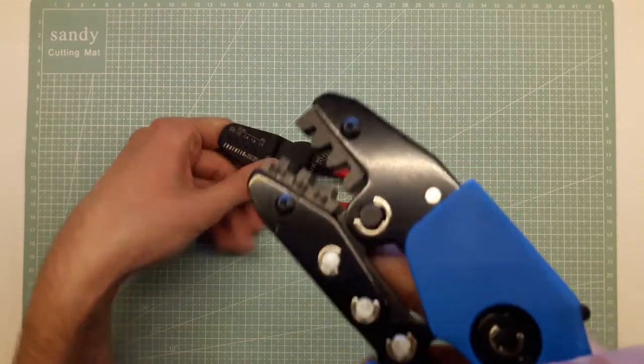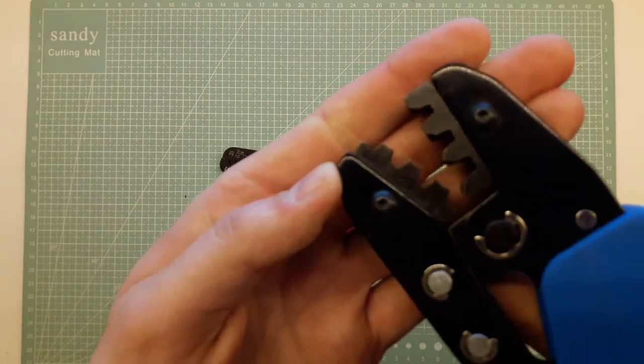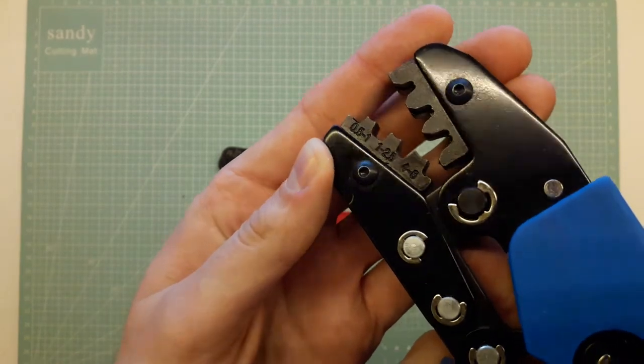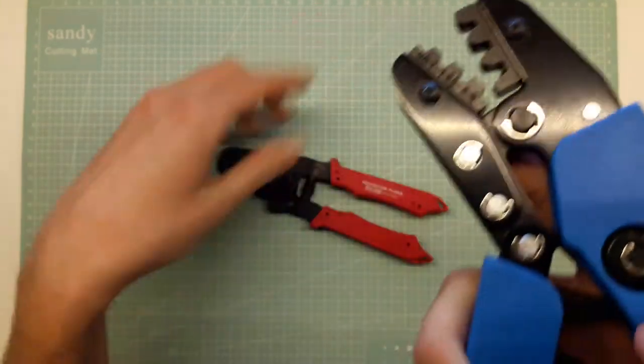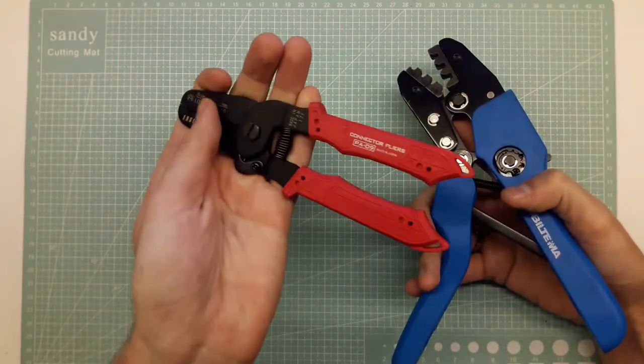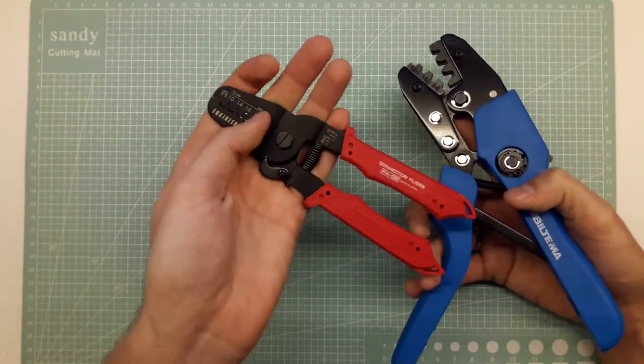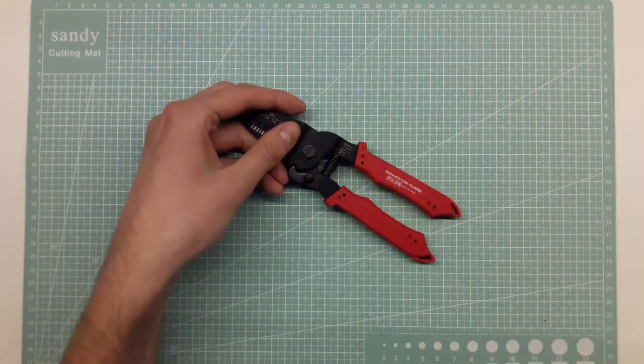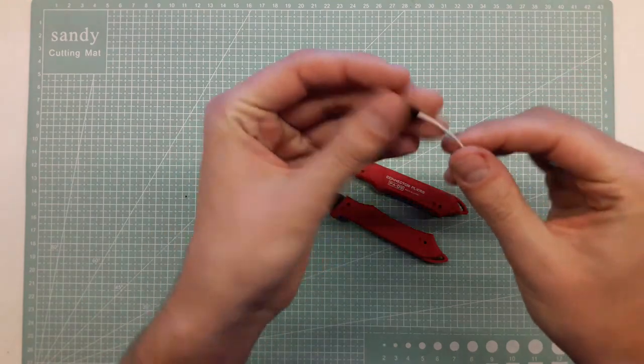And this one does have it says 0.5 but I never got a good crimp with that. Up to six gauges you have to have different sizes of the Engineer ones. But this one has worked out great for the regular servo plugs like this one.